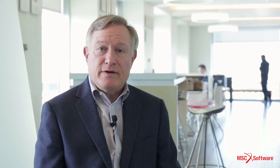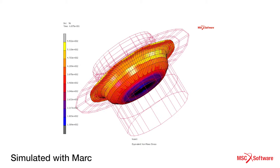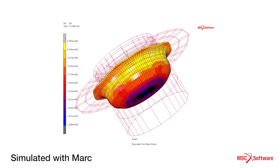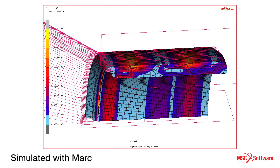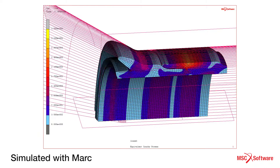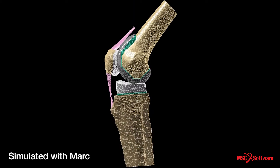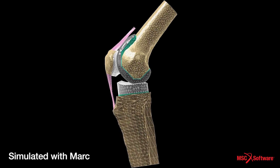The second area has to do with material models. MARC has a wide range of material models for metal plasticity, rubber analysis, foam analysis, and biomedical materials. Material damage can also be predicted using the MARC product.